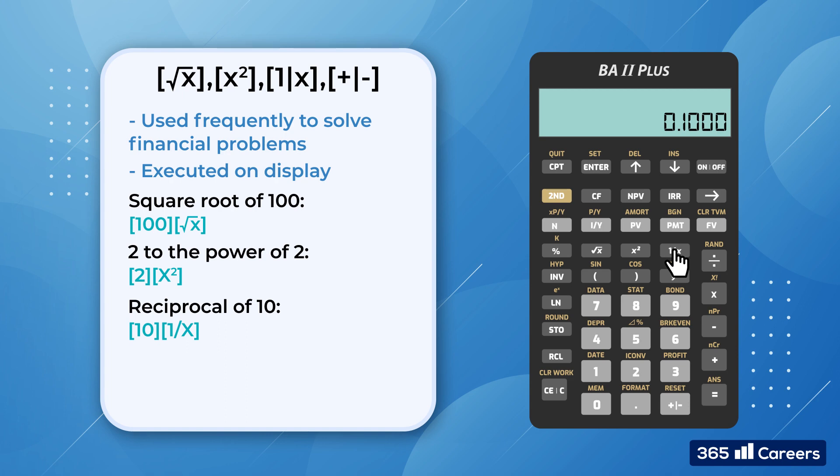Finally, let's check out the plus-minus key, which changes the sign of the current number we have on the display. So if we want to obtain minus 10, we input 10 and hit the plus-minus key. Great!